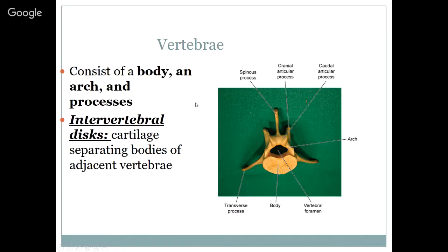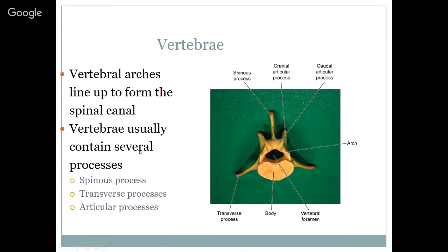Vertebrae consist of a body, an arch, and processes — transverse processes, spinous processes, and cranial and caudal articular processes. The vertebral foramen is where the spinal column goes; that's a major nervous structure we need to keep safe. The bodies come together where your intervertebral discs will be; if there's damage to the disc and it shoots up into the spinal canal, we'll see issues with paralysis. The discs are made up of cartilage. The vertebral arches line up to form the spinal canal.